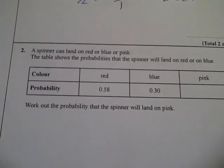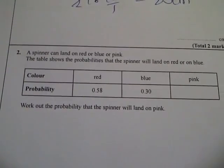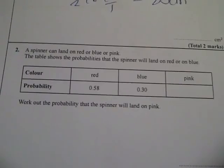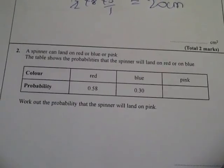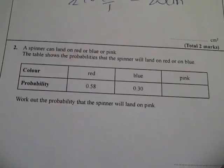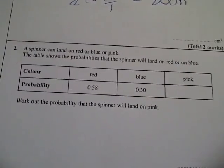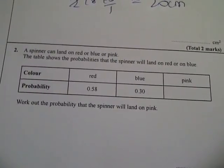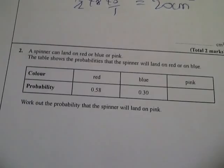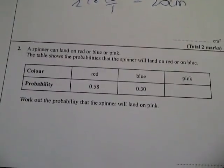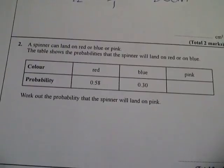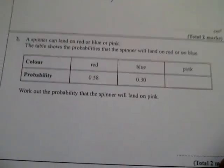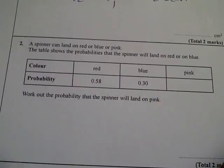Question number two says a spinner can land on red, blue, or pink. The table shows the probability that the spinner will land on red or on blue. Work out the probability that the spinner will land on pink.